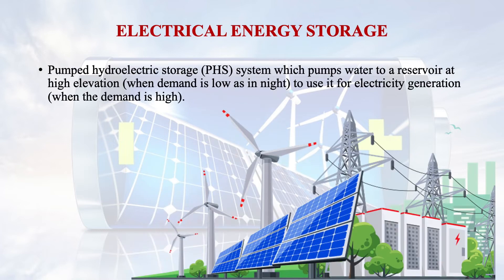In the pumped hydroelectric storage system, water is pumped to a reservoir at high elevation when demand is low, such as at night, to use it for electricity generation when demand is very high. However, if you look into the net energy yield, it is negative, and the reported efficiency is in the 72–75% range. This system is also associated with capacity limitations and other environmental aspects, such as the impact of having large dams.